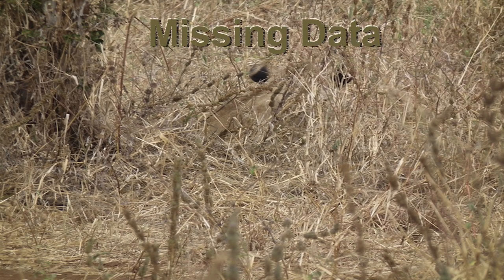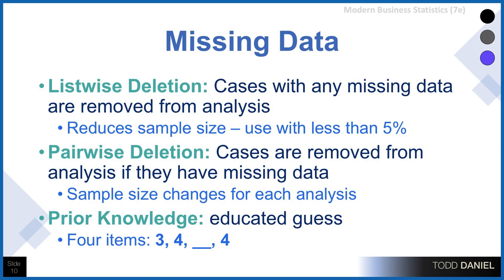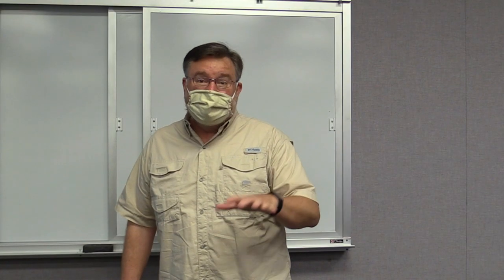Let's talk about missing data. Just like being on safari in Africa wandering through the underbrush, it's the lion that you don't see that eats you. With missing data, it's the data we don't have that can really come back and bite us. It is important that we check for missing data before we do our analysis, get an idea of why those data are missing, and that will give us a clue as to what we can do about it. One option is list-wise deletion, where cases with any missing data are simply removed from the analysis. Of course, that will reduce your sample size, so this is recommended only if you have 5% or fewer of your cases with missing data.